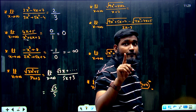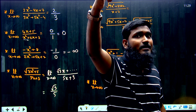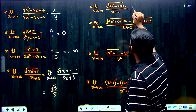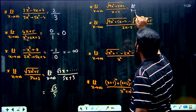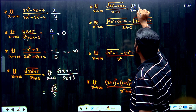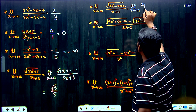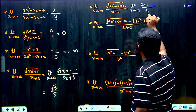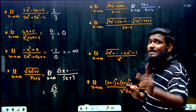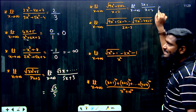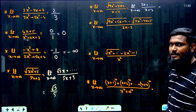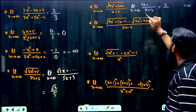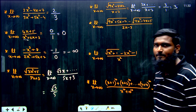Next question: limit x tends to infinity of √(9x² + ...) divided by (x + 7). Applying the same trick, √(9x²) = 3x. The highest degree term is x, with coefficient 3 in the numerator and 1 in the denominator. The answer is 3/1 = 3.